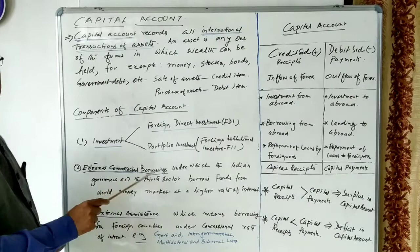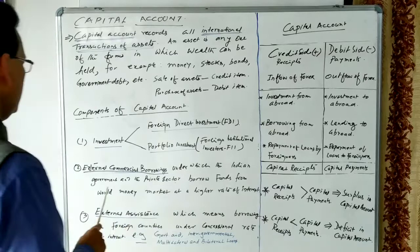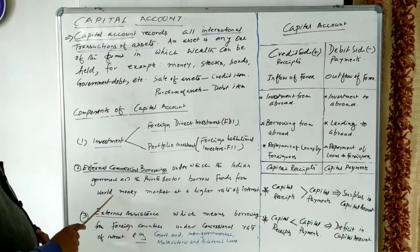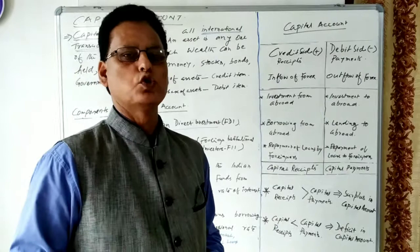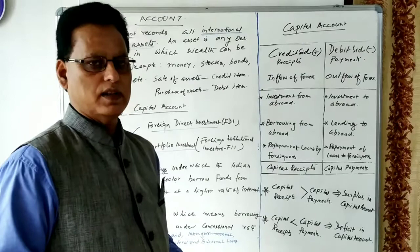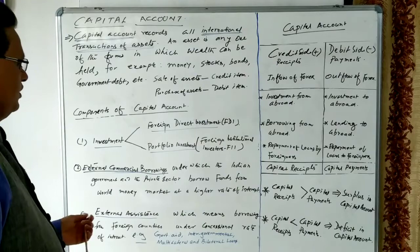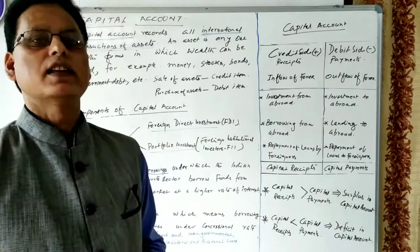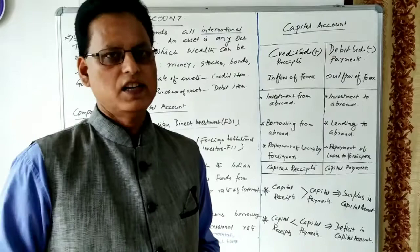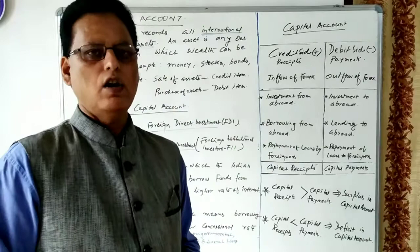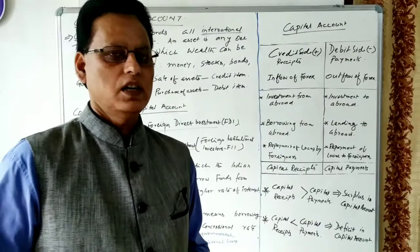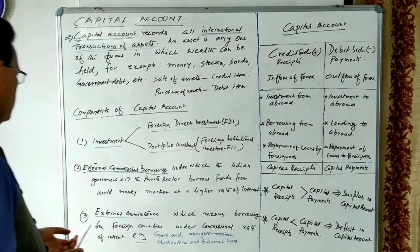The second component is external commercial borrowings (ECB), under which the Indian government and private sector borrow funds from the world money market at a higher rate of interest. When we borrow funds from foreign countries, there is an inflow of foreign exchange entered on the credit side. But when we make repayment of the loan to foreign governments or foreigners, it is entered on the debit side of the capital account.